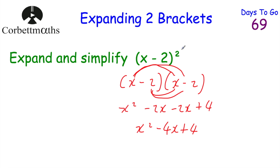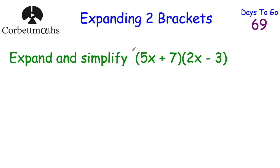Just remember: if you've got something squared, you multiply it by itself. So if it's a bracket, you just write it out beside itself and then expand it.